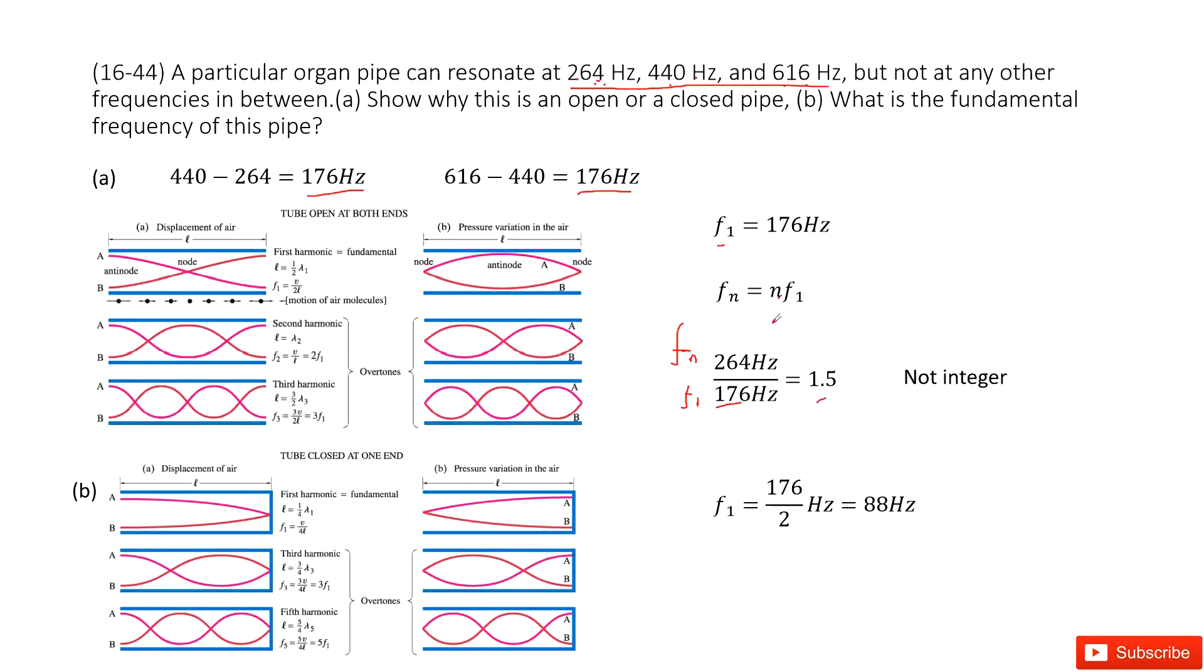Since n is not an integer, this is impossible. This means the pipe is not open at both ends—it is a closed pipe.